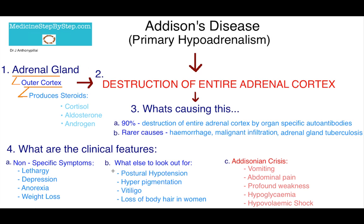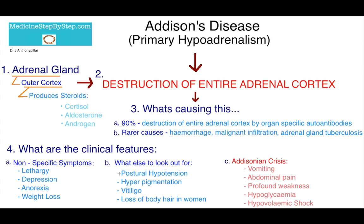A few things to look out for are postural hypotension. This occurs because normally aldosterone acts at the kidneys for salt and water retention. So without aldosterone, you have a loss of salt and water, and as a result you have postural hypotension — which is a fall in blood pressure on a change in posture from lying to standing.